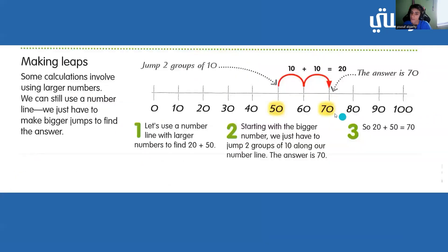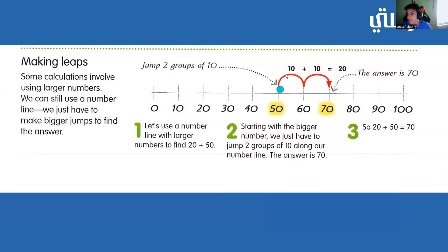So, we don't have to use number lines only counting by 1s. We can use number lines counting by 10s, 50s, 100s, 1000s — anything. Here's an example using a number line counting by 10s: 0, 10, 20, 30, 40, 50, 60, 70, 80, 90, 100, and so on. We have the equation 20 plus 50. Let's find 50 on the number line — here it is. Since we're counting by 10s, and 2 tens equals 20, we jump forward 2 times: from 50 to 60 and 70. So, 20 plus 50 equals 70.